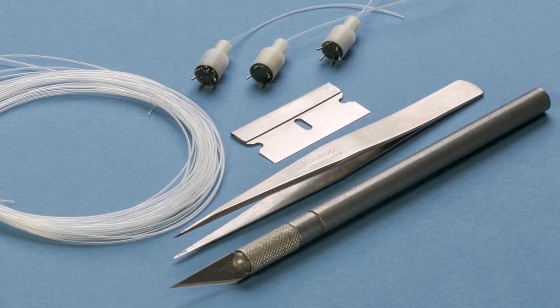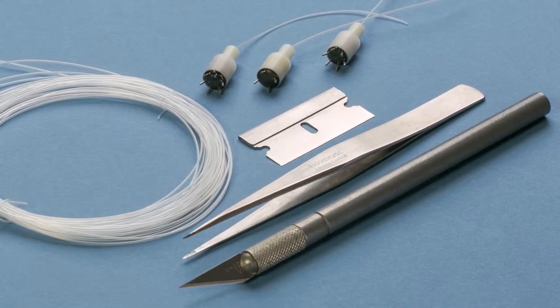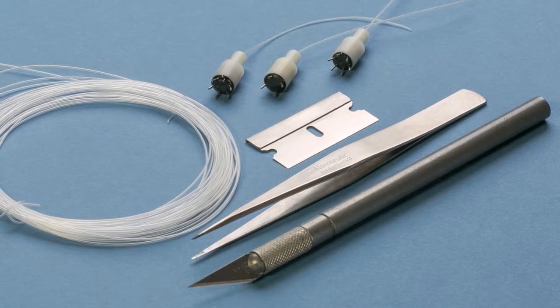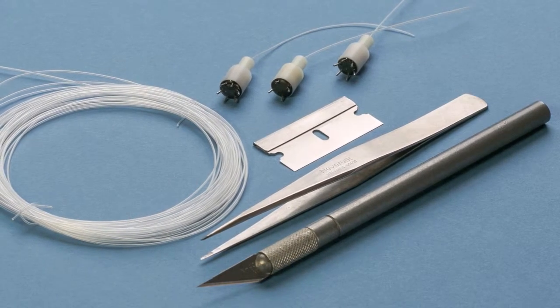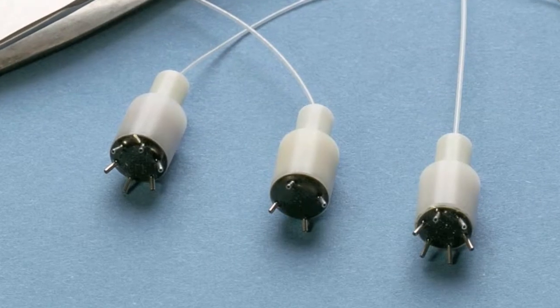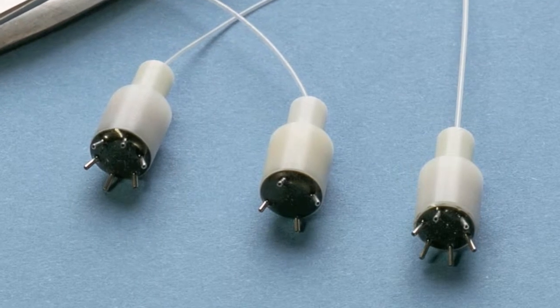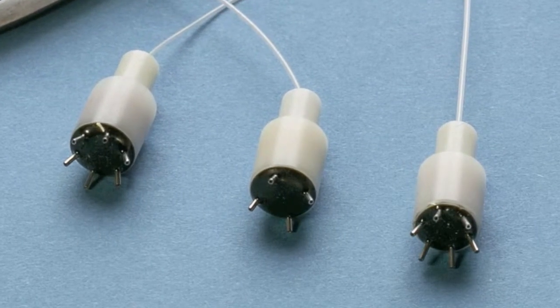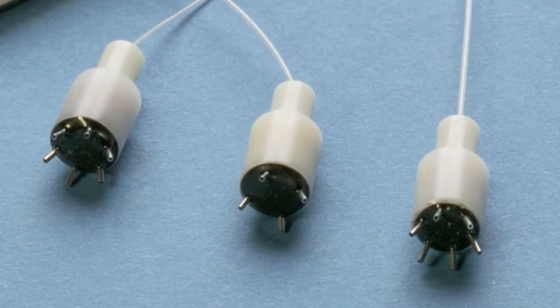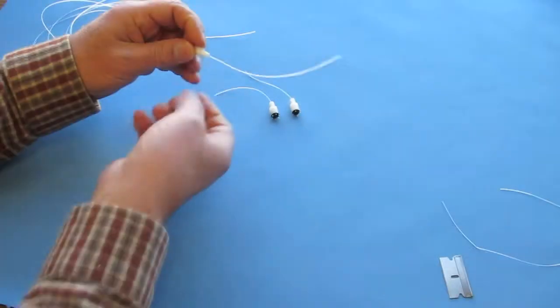The tools required for this job are a single edge razor blade or a scalpel and a length of PE10 tubing. You'll need about 8 to 10 inches of tubing for every manifold. Forceps are optional and may help you hold on to the tubing while you're stretching it.